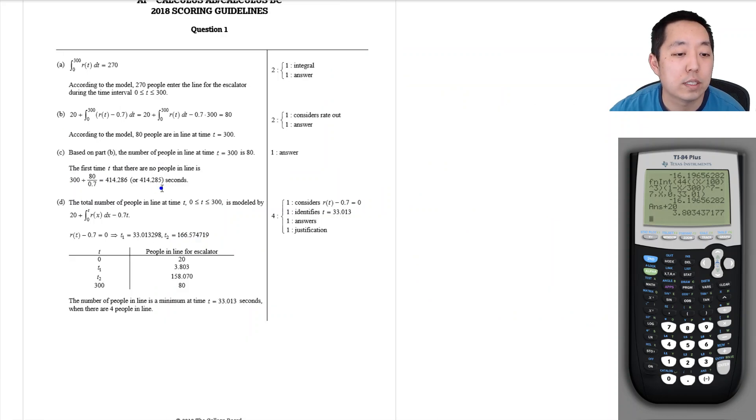They actually checked both numbers, even though the second one is a relative max, not a min. So the minimum number they conclude is 4 people. Hope you found that helpful, I'll see you in the next video.